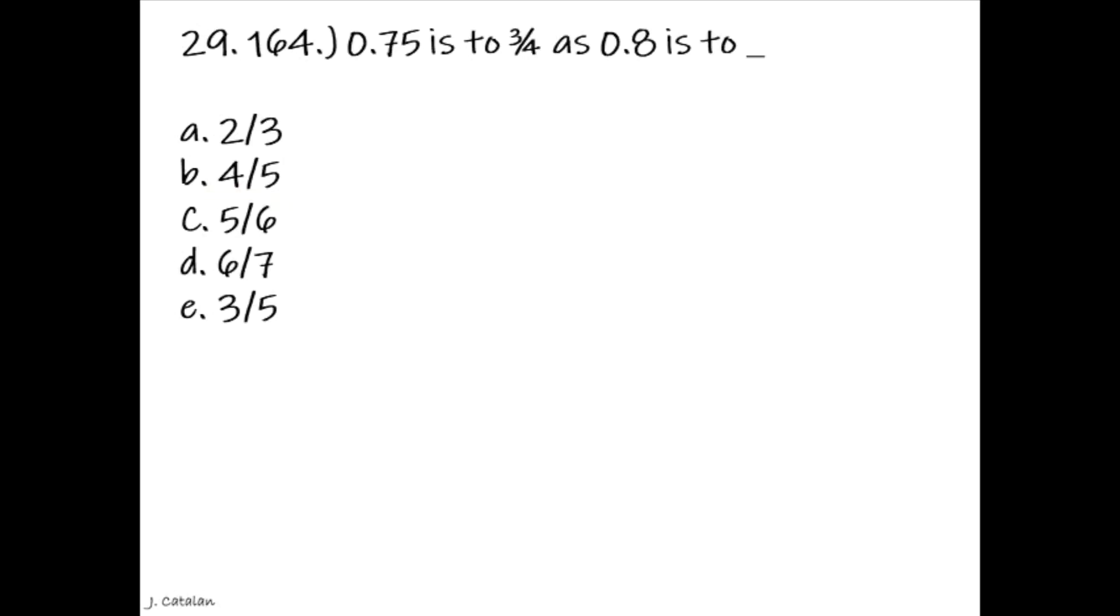Question. 0.75 is to 3 quarters as 0.8 is to underscore. Answer. 4-5.